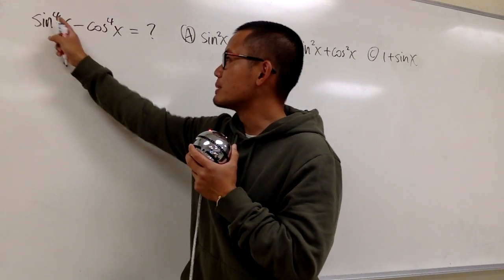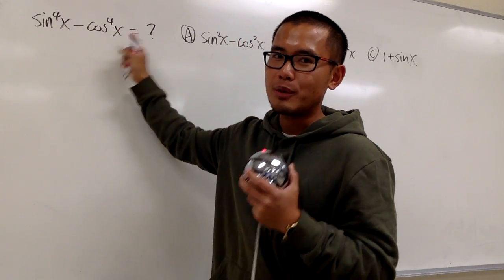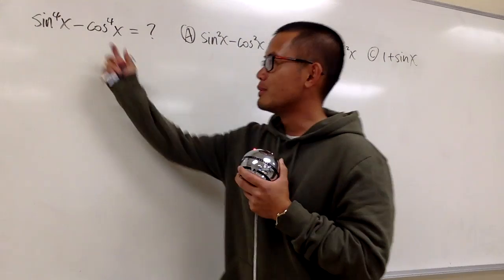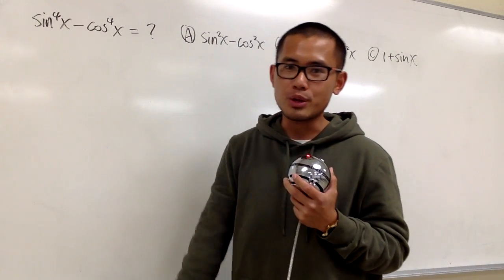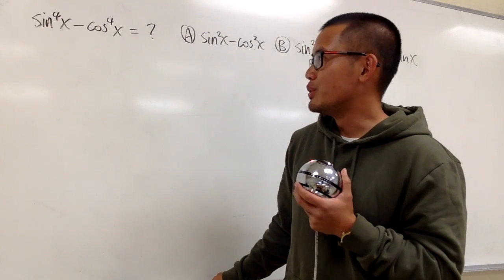Here we have sine to the fourth power x minus cosine to the fourth power x. Well, yes, both terms are in terms of sine and cosine already, so there's nothing that we need to do for that.